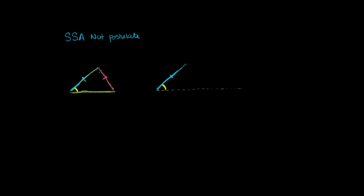Now we have this magenta side — another side that's congruent. So this thing could pivot over here. We know nothing about this angle, so it could form any angle, but it does have to reach the other side. One possibility is that the triangles are congruent — maybe this side goes down just like that, in which case we actually would have congruent triangles. But the key insight — the reason why SSA isn't valid — is that this side could also come down a different way. There are two ways to get down to this base, and that's why SSA by itself, with no other information, is ambiguous. It does not give you enough information to say that those triangles are definitely the same.